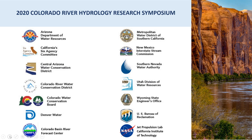This is the next symposium in that series from that group of folks who originally started talking. This group is really a willing coalition of folks who are interested in advancing understanding of climate and hydrology information and using it better in the basin. Their goal is specifically to advance the scientific understanding to improve the accuracy of hydrologic forecasts and projections, to enhance the performance of predictive tools, and to better understand the uncertainty related to future supply and demand conditions in the Colorado River Basin.